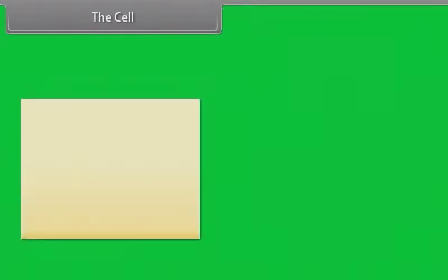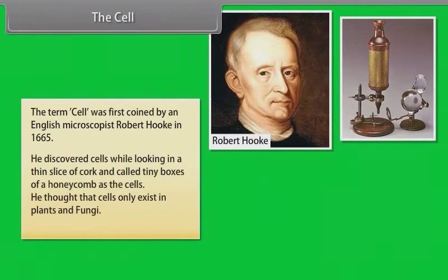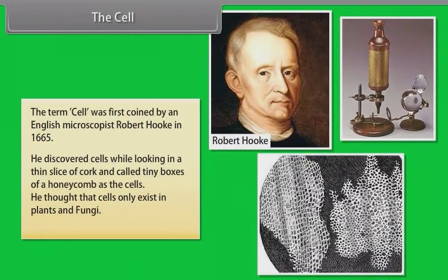The term cell was first coined by an English microscopist Robert Hooke in 1665. He discovered cells while looking at a thin slice of cork and called the tiny boxes of a honeycomb as cells.